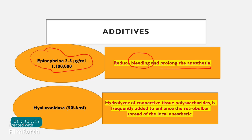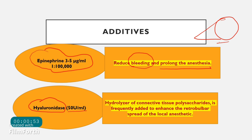The other agent added is hyaluronidase, at a dose of about 50 units per ml. It hydrolyzes connective tissue polysaccharides and is added to enhance retrobulbar spread of the local anesthetic. There is significant connective tissue behind the eyeball, and the anesthetic needs to diffuse into and around the muscle cone — hyaluronidase breaks up these connective tissue bonds to facilitate this.